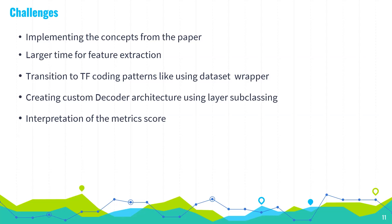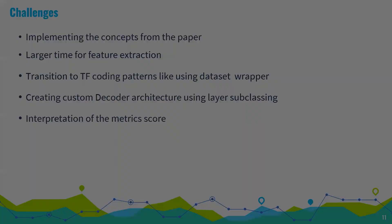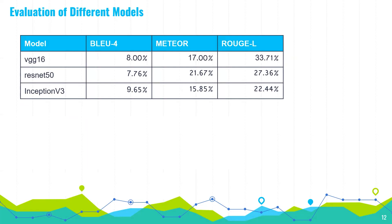Interpreting evaluation scores was another challenge. For caption generation there are different metrics — BLEU, METEOR, and ROUGE. METEOR takes both precision and recall and considers synonyms as well. Since our model generates synonyms in similar contexts, we thought METEOR could be a better indicator for our use case.